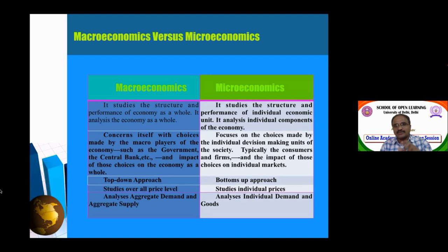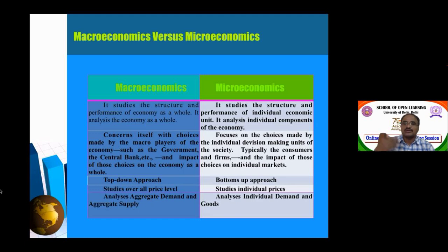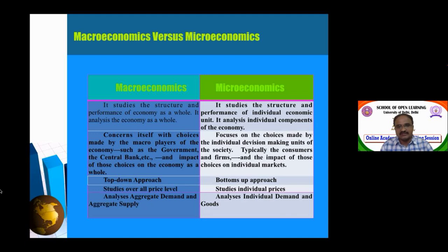The bottom-up approach, related to microeconomics, works from the ground up. For example, prices are fixed first; based on that price, demand increases or decreases, and supply responds accordingly. Decisions are taken at the individual or district level based on these price signals. So the top-down approach relates to macroeconomics and the bottom-up approach relates to microeconomics.